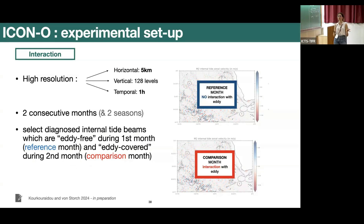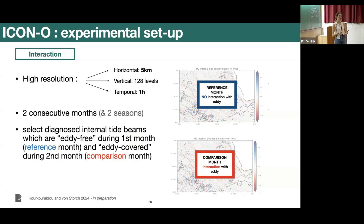Looking at the interaction: I have two months for each season. We use the first month as a reference month, focusing on one particular beam which has no contact with an eddy. The same beam during the second — comparison — month is covered by an eddy and has interacted with it. This allows us to compare the same beam before and after the eddy interaction.